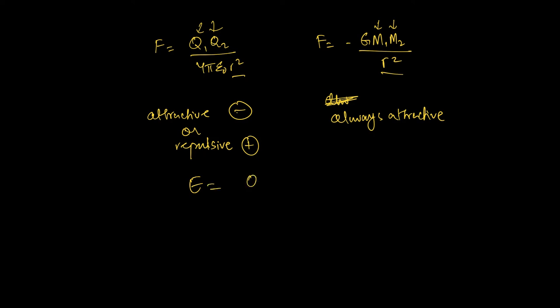Our electric field strength equation looks like E = Q / (4πε₀R²). If I were to sketch this with distance on the x-axis and electric field strength on the y-axis, for a positive charge it's going to be inversely proportional in a squared way to R. The curve is going to look like a hyperbola. The field becomes stronger the closer you get to it.